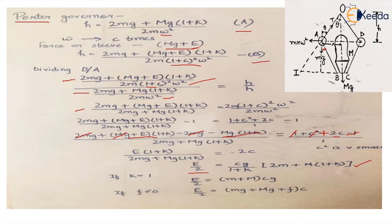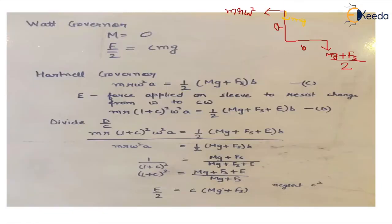In the special case where k = 1 — meaning θ and β are equal — the k factor is removed and the equation simplifies to E/2 = (m + M)·c·g. In the case where there is no friction acting on the body, the mass acting on the sleeve is considered zero, so the equation further simplifies to E/2 = c·m·g.